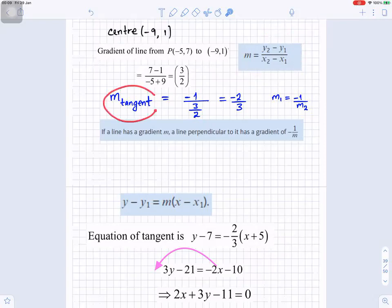So the gradient of tangent line will be minus 1 over that gradient, minus 1 over 3 over 2, which will give you minus 2 over 3. And that's the formula I'm using on the side. And that's the explanation for it. If a line has a gradient m, a line perpendicular to it has a gradient of minus 1 over m.